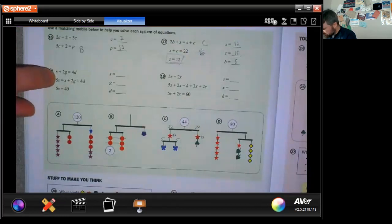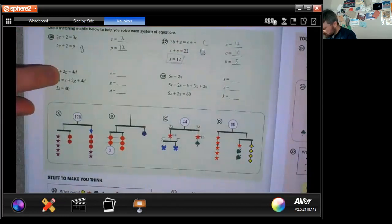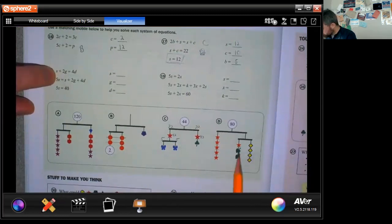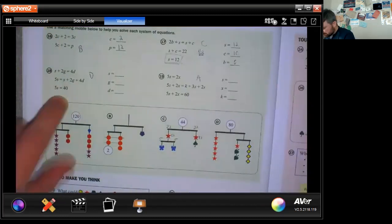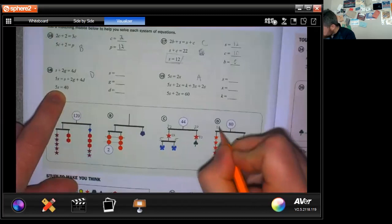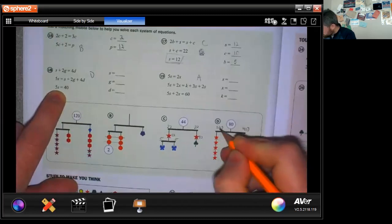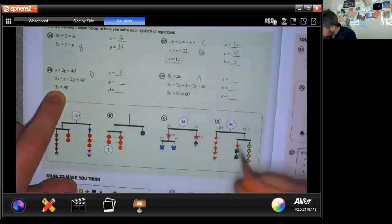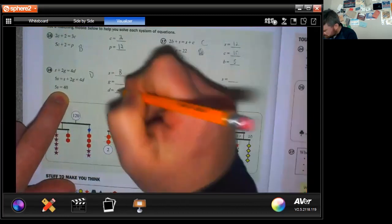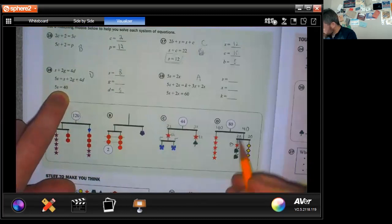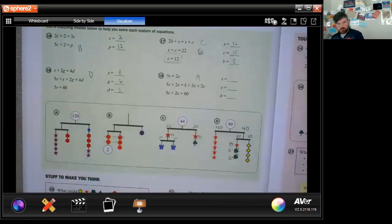Problem 18. So star plus 2G equals 4 diamonds. A star plus 2 green equals 4 diamonds. 5 stars plus a star plus 2G. So this one is D, which means this one must be A. It says 5 stars is 40. So 40 divided by 5 is 8. So star is worth 8. So this is 8. This is 20 and 20. 20 divided by 4 is 5. So diamonds are worth 5. 20 minus 8 is 12. So this is 6 and 6. So green is 6.